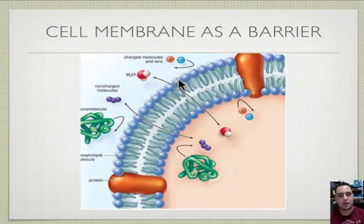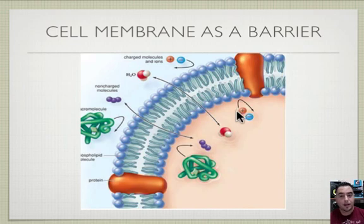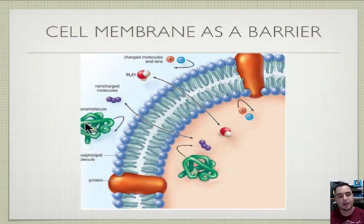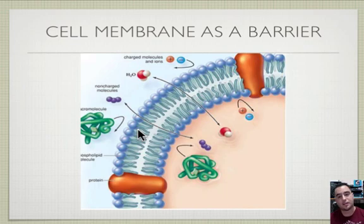Even small charged molecules like ions will just bounce right off — they can't get in or out. That's why we need special proteins like ion channels to help them through. Bigger molecules can't pass through the layer either; they need other help, like endocytosis or exocytosis, which use energy.